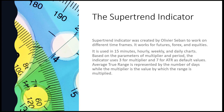The Supertrend Indicator was developed by Oliver Saban to work on different timeframes. It works for futures, Forex, equities — anything we're looking at to trade in short-term timeframes. It is used on 15-minute, hourly, weekly, and daily charts. Based on the parameters of the multiplier and the period, the indicator uses 3 for the multiplier and 7 for the ATR as the default values. It uses ATR — average true range — represented by a number of days, while the multiplier is the value by which the range is multiplied.